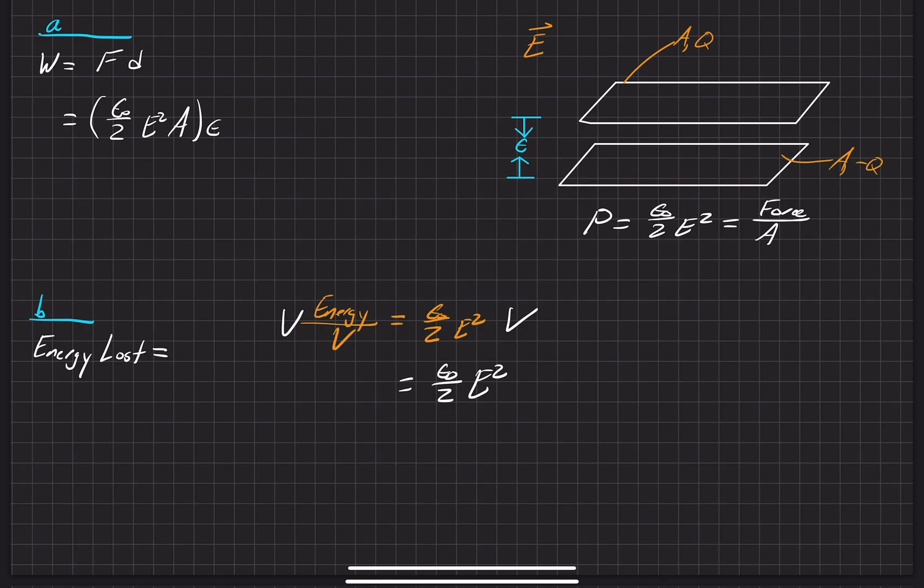We'll go ahead and write it over here, epsilon times the area. And now, this is our energy that was lost in the system.